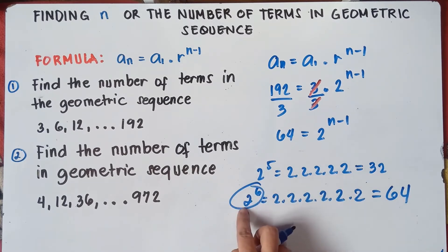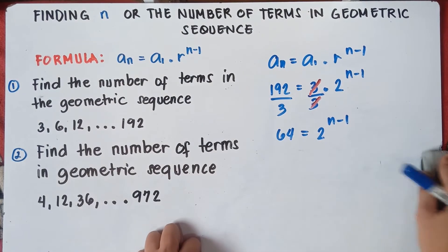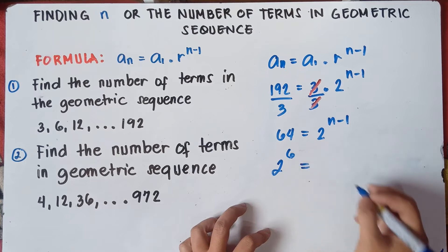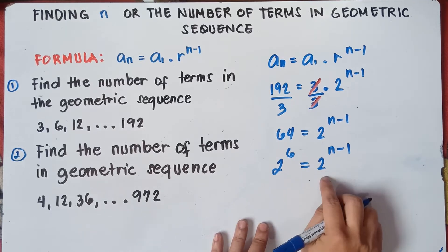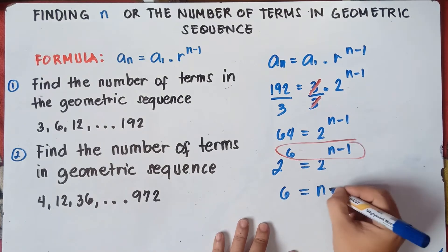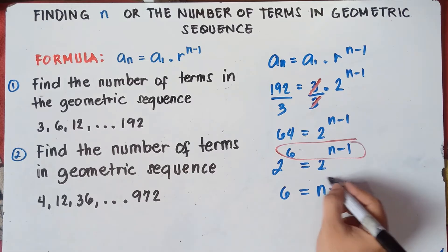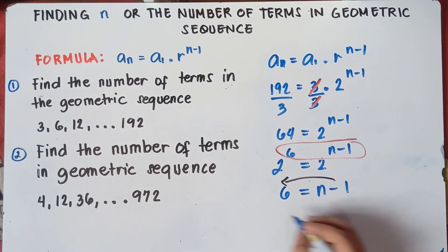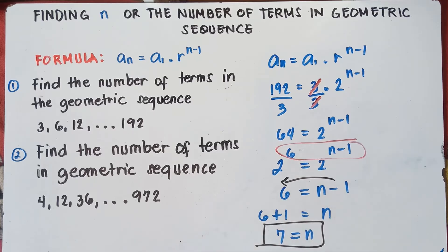So we can write this as 2 raised to the power of 6 equals 2 raised to the power of n minus 1. Since they have the same base, according to the 1-to-1 property, we can equate the exponents: 6 equals n minus 1. Transposing negative 1, we get 6 plus 1 equals n. So n equals 7. The number of terms for number 1 is 7.